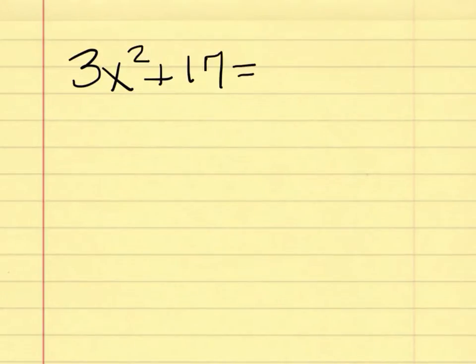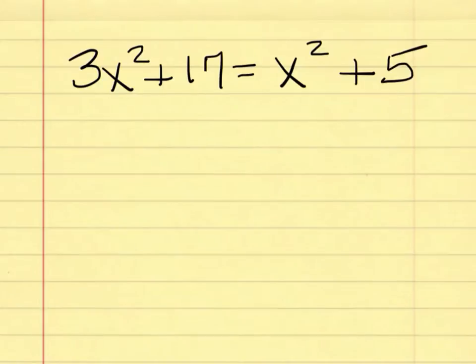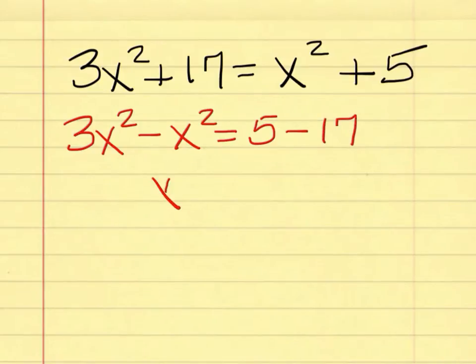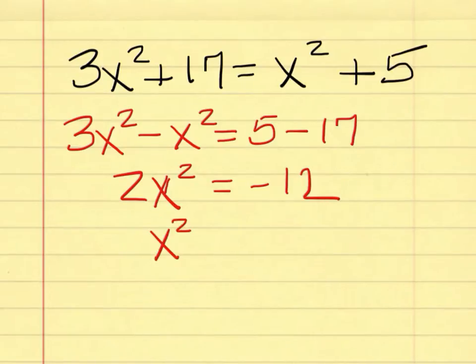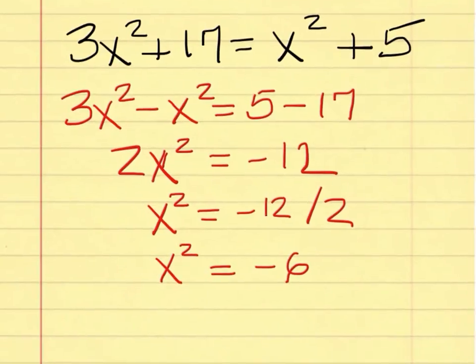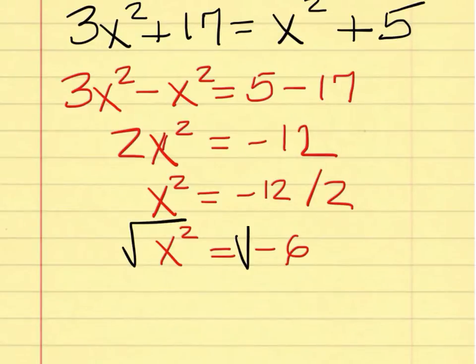This is like extra credit. Let's see if you can come up with an answer that is close or right on. The problem is 3x squared plus 17 equals x squared plus 5. For this problem you should have 3x squared minus x squared equals 5 minus 17. That's 2x squared equals negative 12. Divide negative 12 by 2 to get x squared equals negative 6. When you do the square root of both sides, x ends up being no real solution.